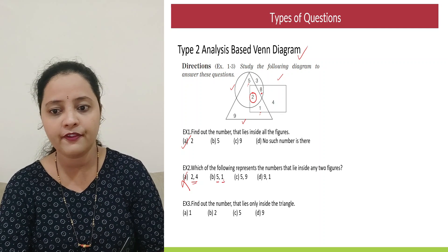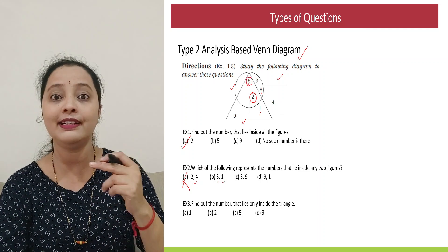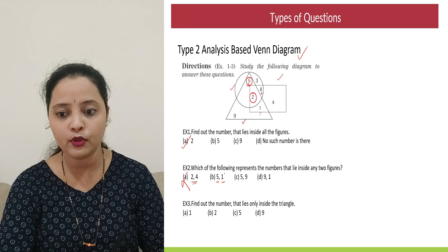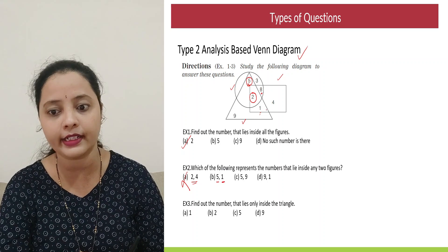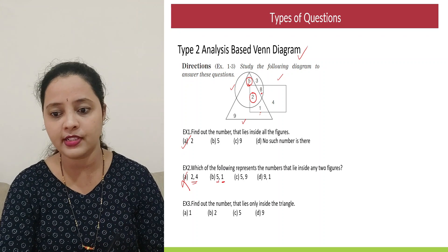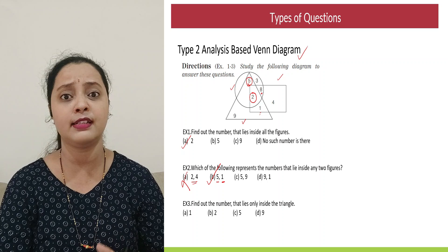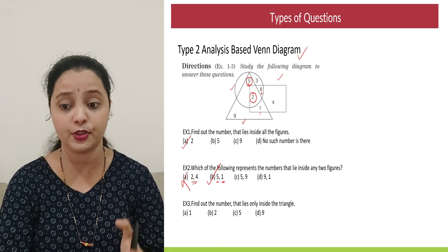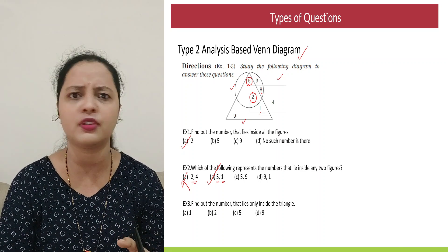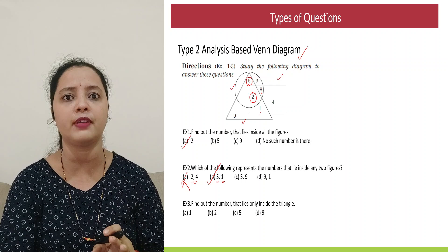Then coming to option B. It says 5 and 1. Now if I look at 5, yes, it's inside triangle and circle. And if you look for 1, it's inside rectangle and triangle. So obviously option B is correct. And since this is MCQ, there's only one correct option. So is there a need of checking the other option? Not needed. You can just go with option B.